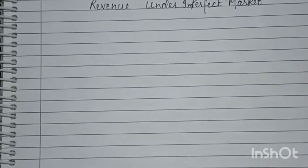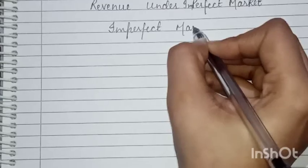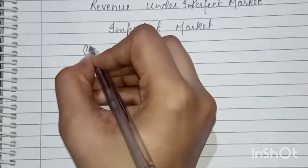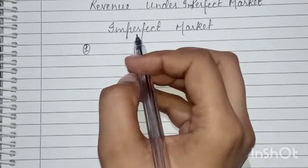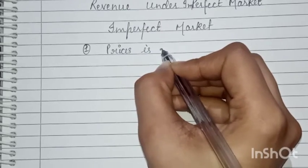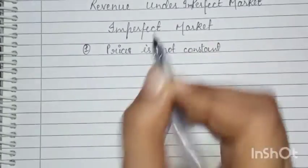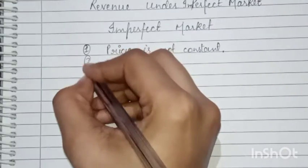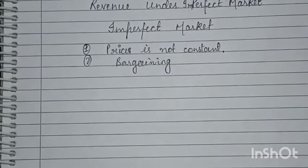Now let's start revenue in the imperfect market. In the imperfect market, we will see how it differs from the perfect market. The key characteristic of the imperfect market is that price is not constant. Price is not constant here — the customer can bargain from the producer, supplier, or seller. Bargaining takes place in this case.